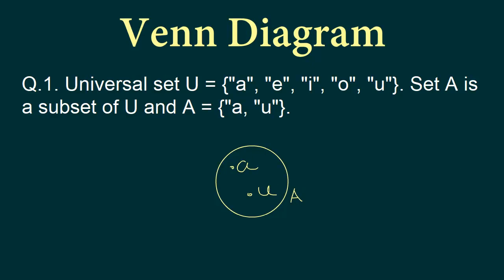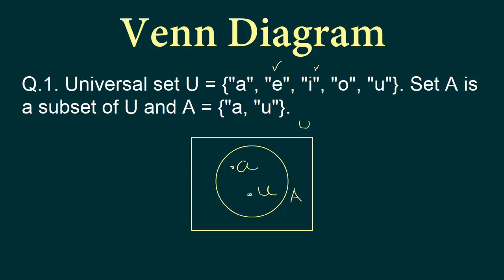Next we draw our rectangle, and the rectangle is the universal set. We write it as uppercase U. The universal set contains A, E, I, O, U. A and U are already placed inside the circle, so now we need to add E, I, and O. Let's say this point is E, this point is I, and this point is O. This is the Venn diagram for this particular question.